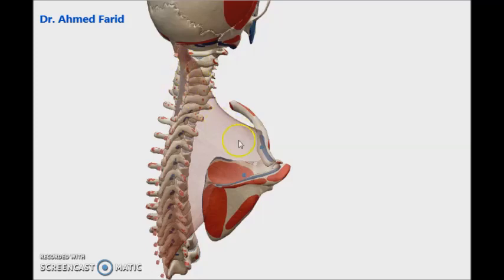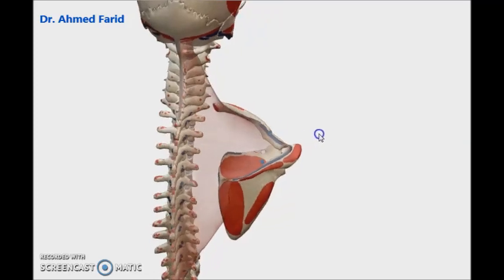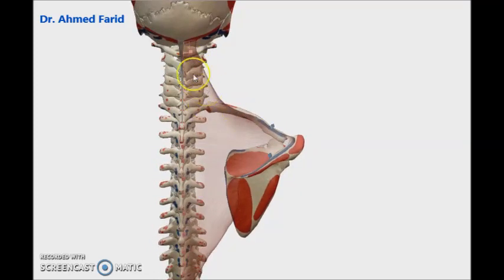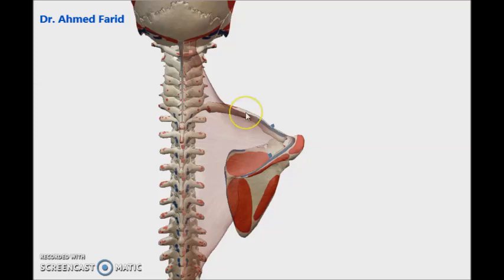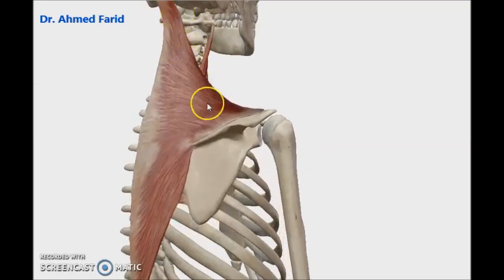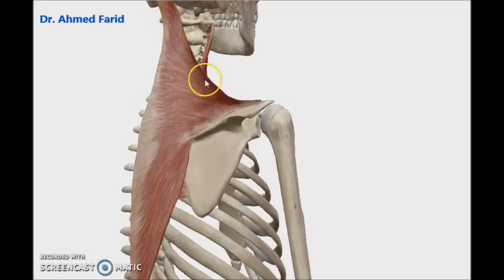The origin and insertion show that trapezius has three directions of fibers: the upper fibers are descending downwards, the lower fibers are ascending upwards, and the middle fibers are horizontal. This affects the action of the muscle. Regarding the upper fibers of trapezius, they will pull the scapula upward, forming elevation of the shoulder girdle — elevation of the scapula — as shown clearly in this animation.